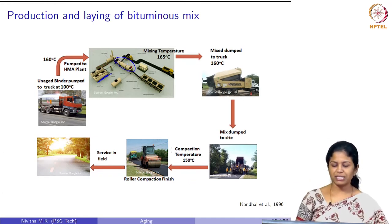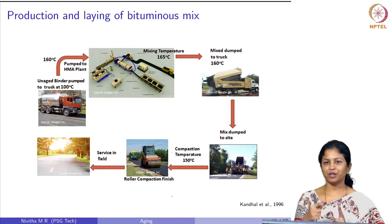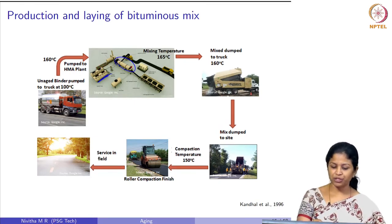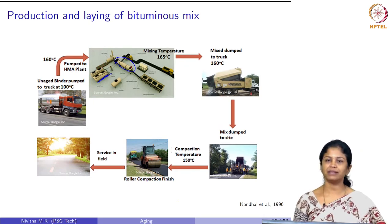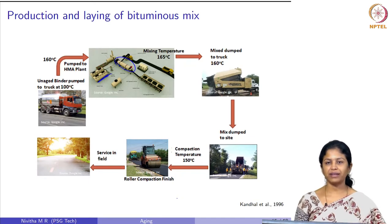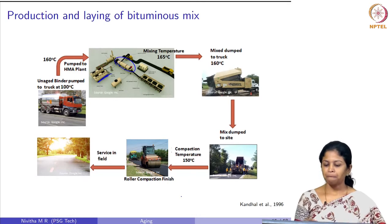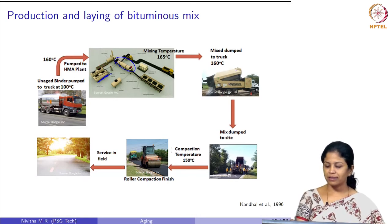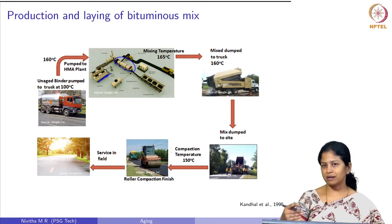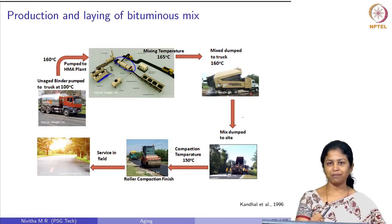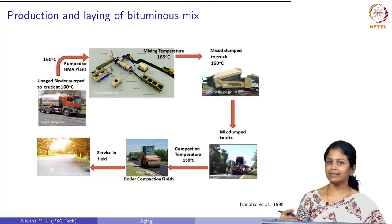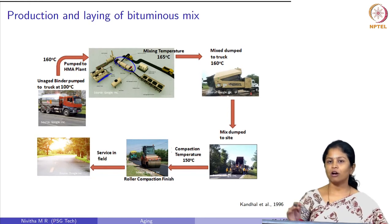This is the mixing drum where the aggregates and bitumen are mixed together. It is again heated from the storage tanks and transferred to this mixing drum. Mixing happens at a temperature of 165 degrees Celsius for unmodified bitumen, and even higher temperatures for modified bitumen. The mix is then dumped onto trucks, which transfer it from the batching plant to the specific point of construction, where it is spread on the granular layer and compacted.